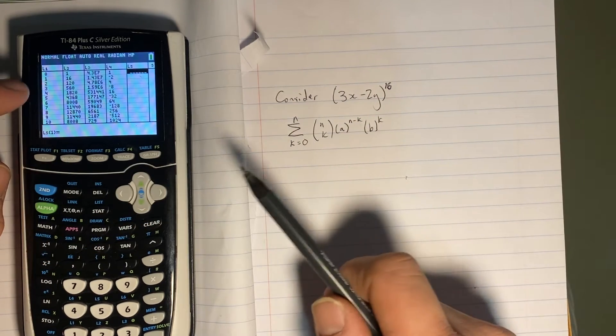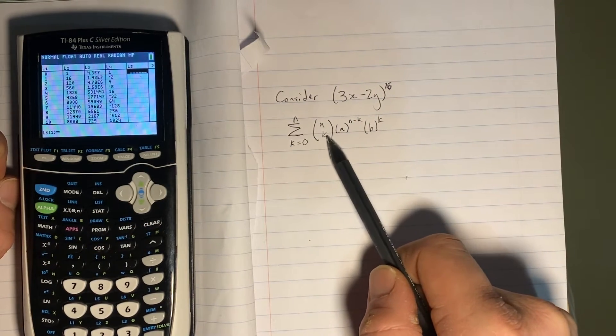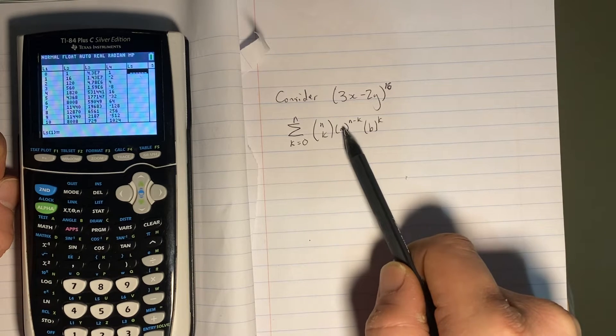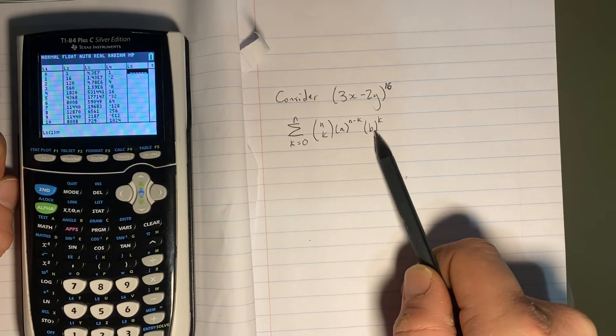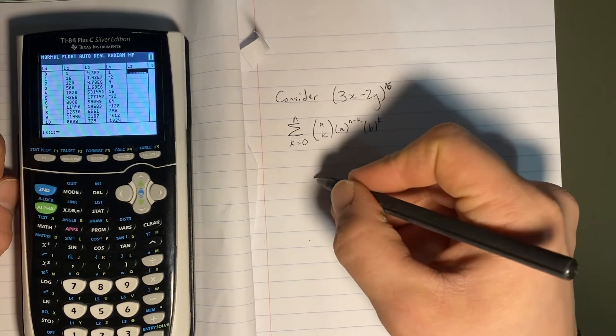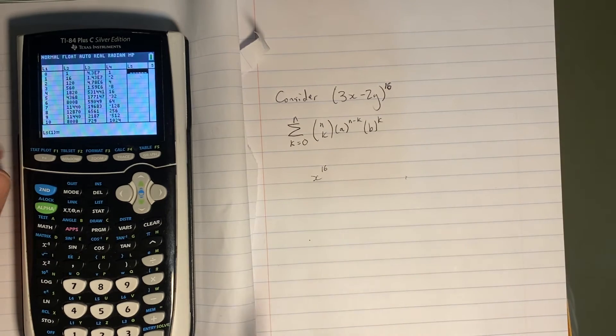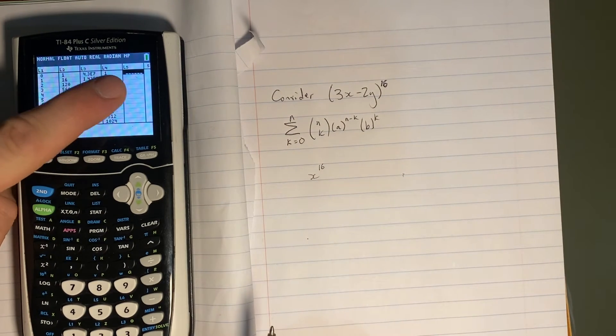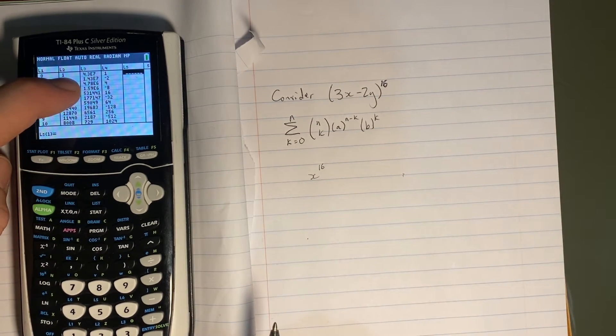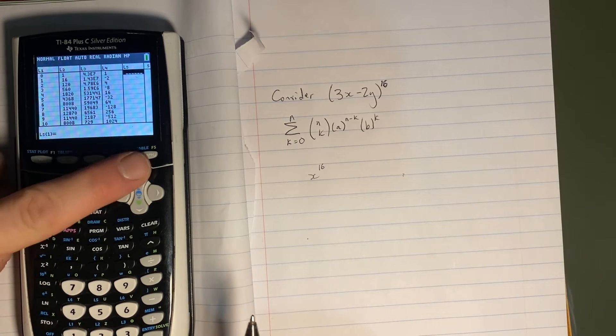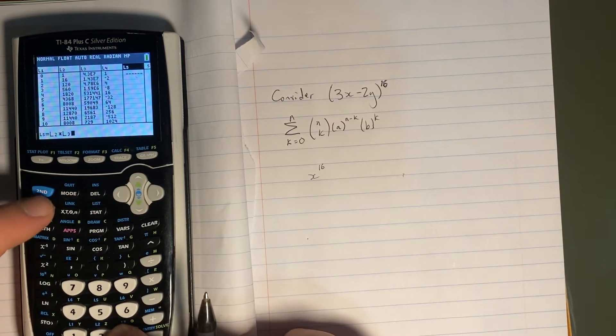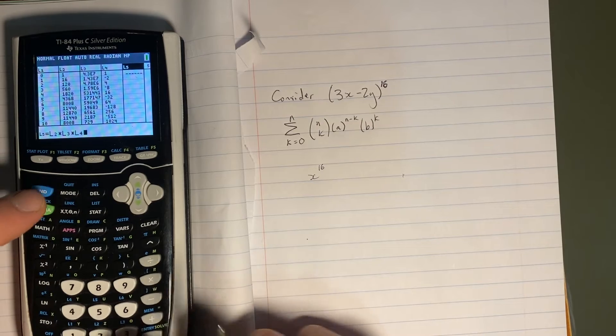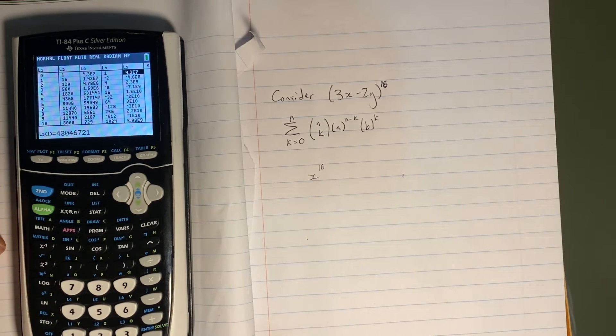Now we'll go over to L5. And this is where we're going to put it all together. Because remember, to find the coefficient, it's going to be this term times the numerical portion of this term times the numerical portion of this term. And that will be my first coefficient of x to the power of 16. So L5 is going to contain the product of L2, L3, and L4. So I'll just go up into L5 and I'll type L2 times L3 times L4. And it should fill that up with my coefficients.